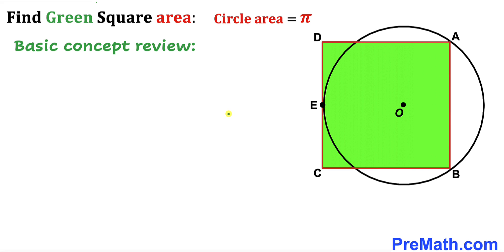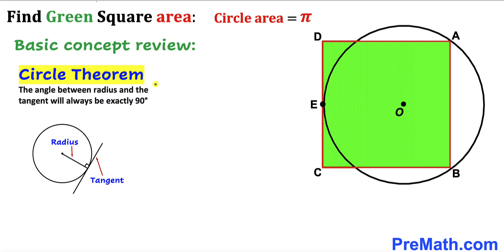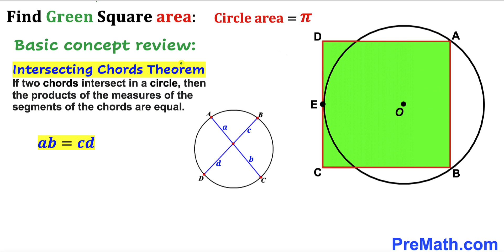Before we proceed, let's go over the basic concepts. First, the circle theorem: the angle between the radius and the tangent will always be exactly 90 degrees. Next, the intersecting chords theorem: if two chords intersect inside a circle, then the product of the measures of the segments of one chord equals the product of the segments of the other chord.